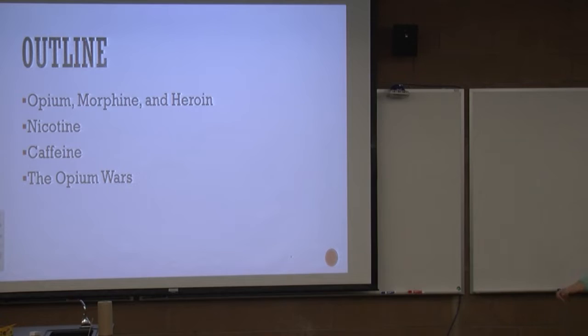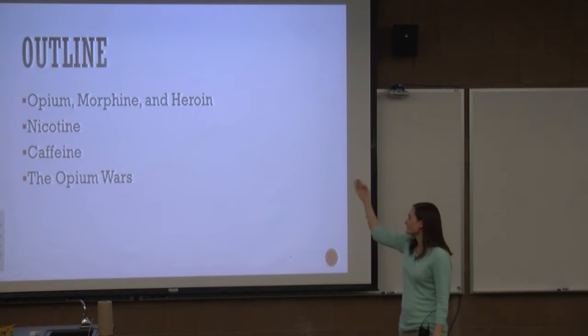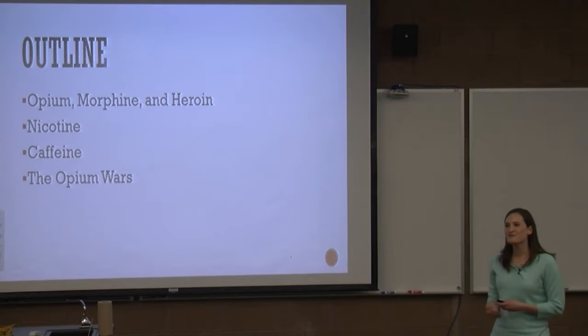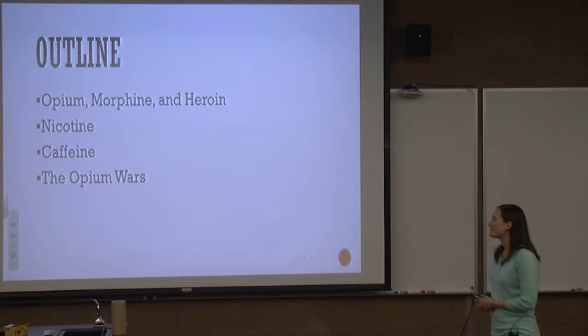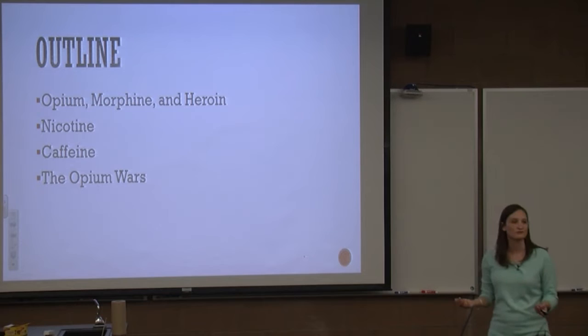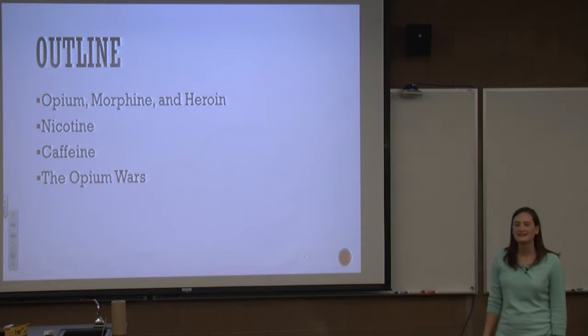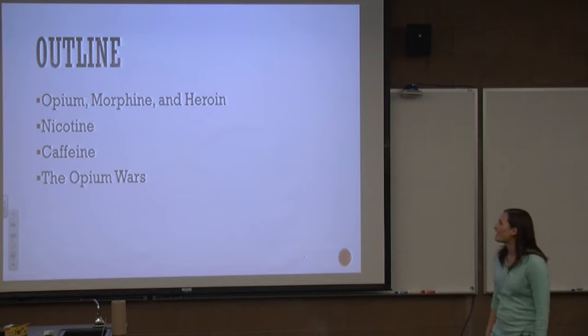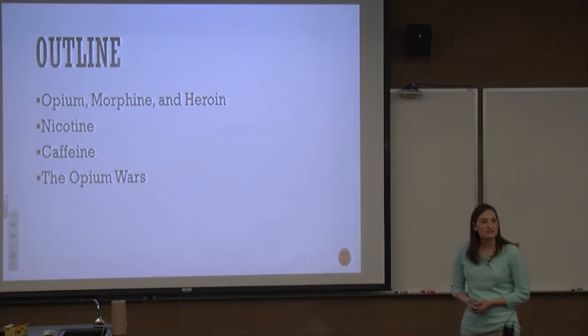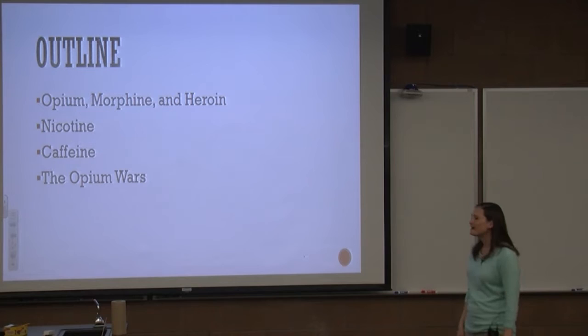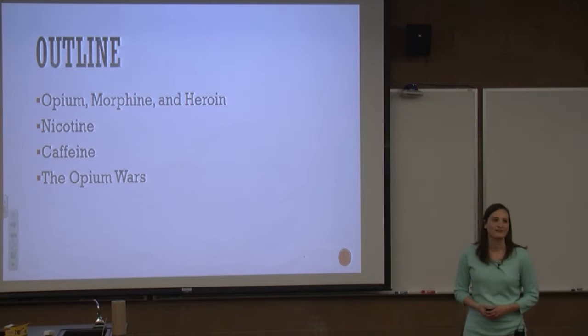I'm going to start with the opiates — opium and then from opium, morphine. You can't talk about the opiates without a little talk on heroin. I'm going to spend the most time on that because this is a class of drugs that are very well controlled right now. The other two — nicotine and caffeine — you can get nicotine if you're over 18. Then I'll talk about their history, where they came from, how they've spread throughout the world, and finally how these three molecules came together to really spark the opium wars in China.